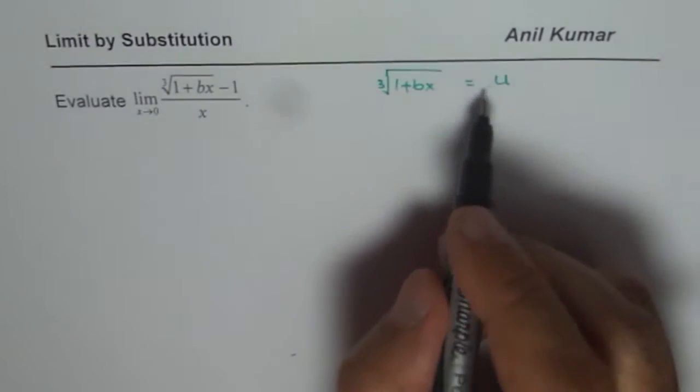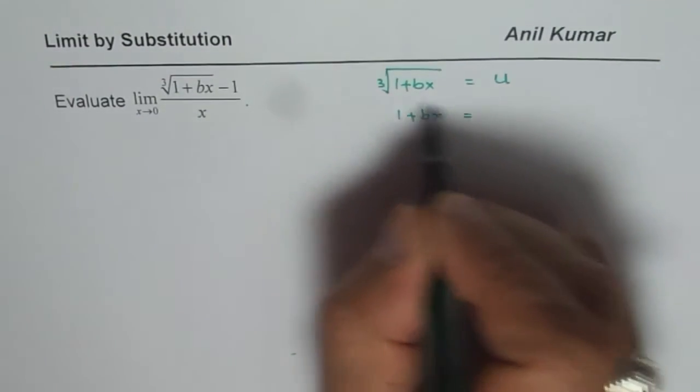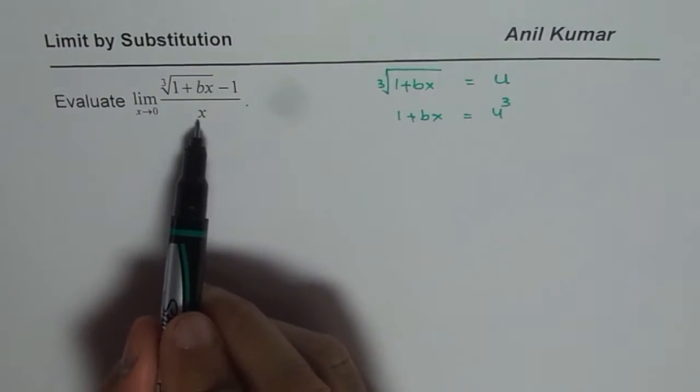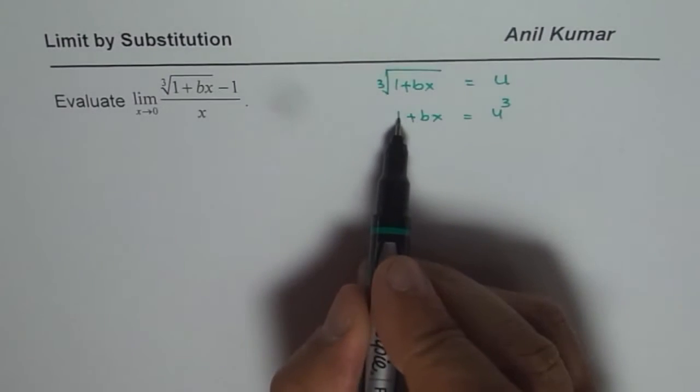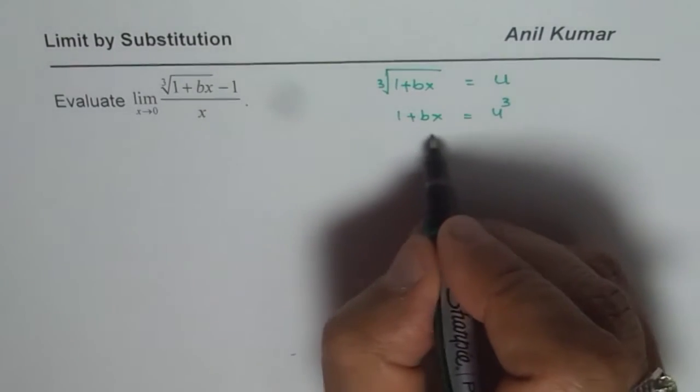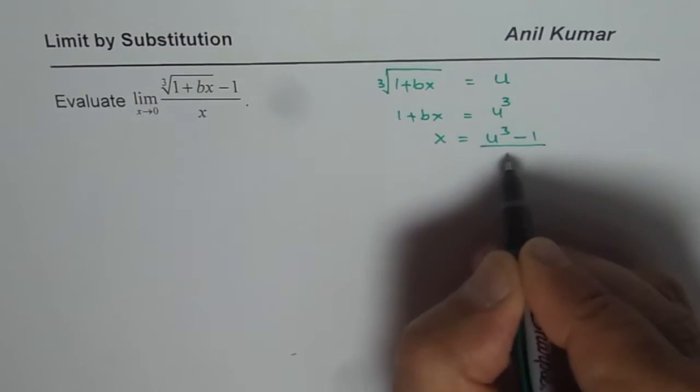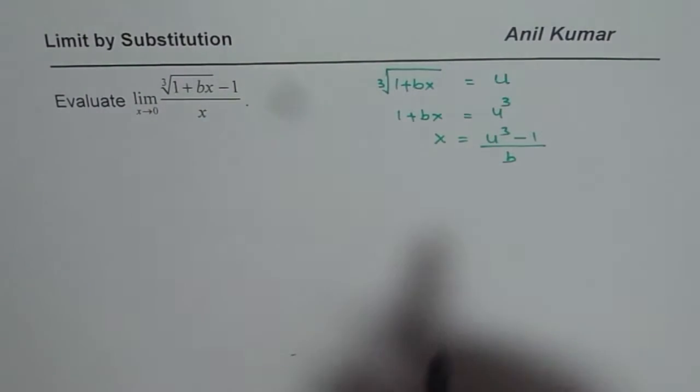Now in that case what is 1 plus bx equal to? Well, cube both sides we get u cubed. But we need what x is. So to isolate x I will take away 1. So we can say x equals u cubed minus 1 divided by b, so we can isolate x.